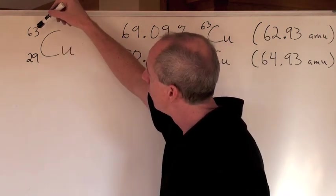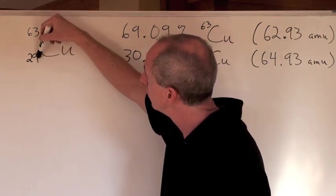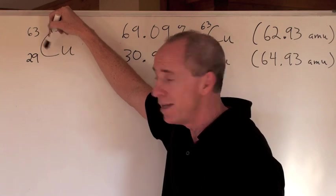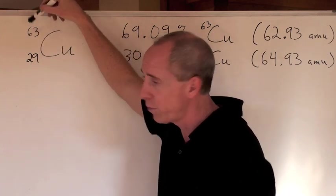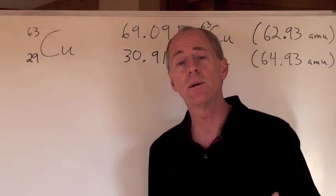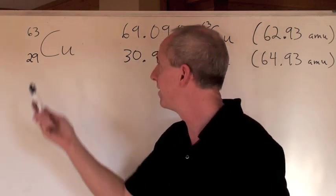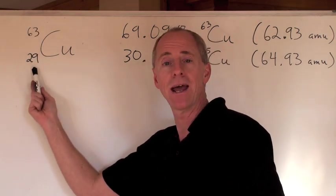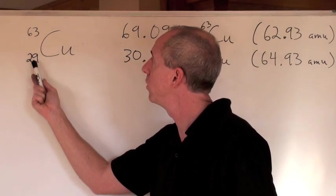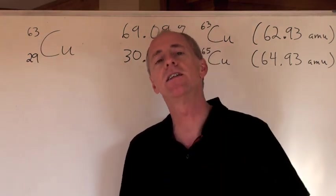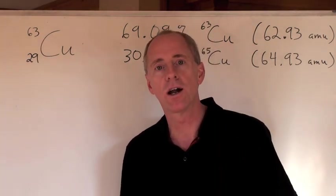So now, here's the thing. The number of protons in copper is 29. In this isotope of copper, 63, what is the number of neutrons? It's the difference between the mass number and the atomic number. So the difference between those two numbers is going to be 34. That's the number of neutrons there are.